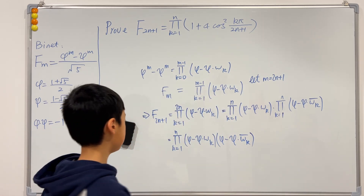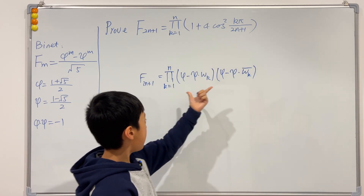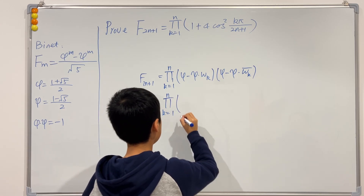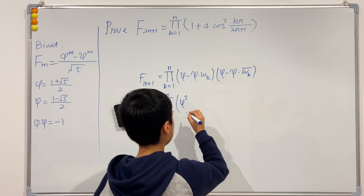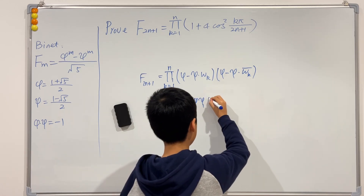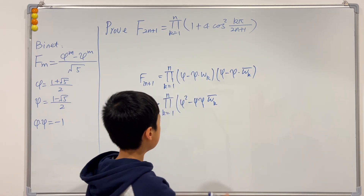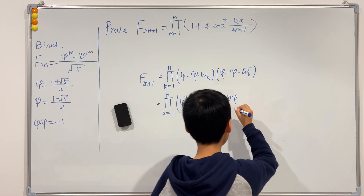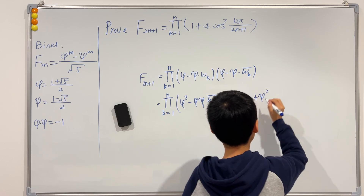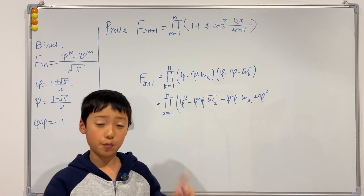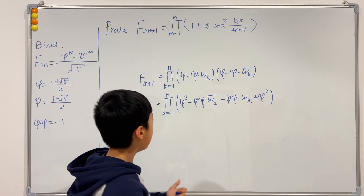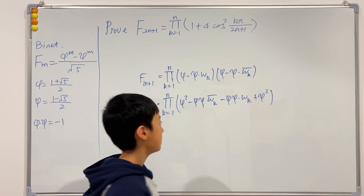Now we expand the inside of each factor. Multiplying out (φ − c·ω_k)(φ − c·ω̄_k) gives φ² minus φc·ω̄_k minus φc·ω_k plus c²·(ω_k·ω̄_k). Since a complex number times its conjugate equals its modulus squared, and |ω_k| = 1, we have ω_k·ω̄_k = 1. So the expression becomes φ² + c² minus φc·(ω_k + ω̄_k).